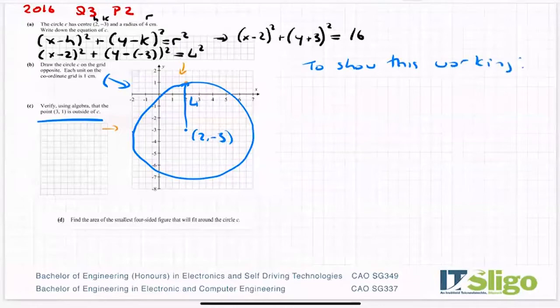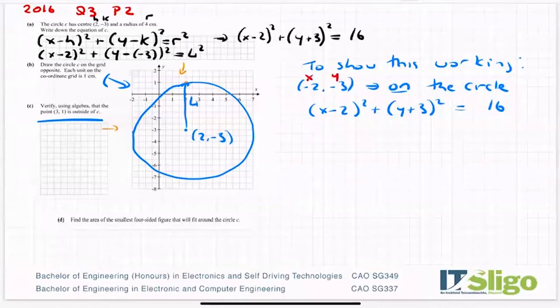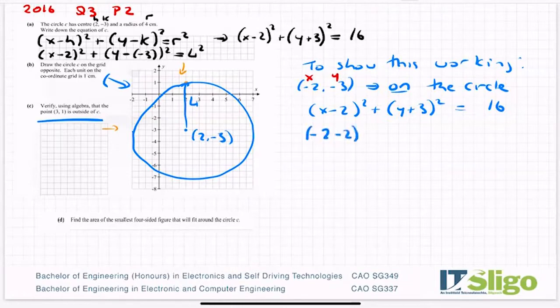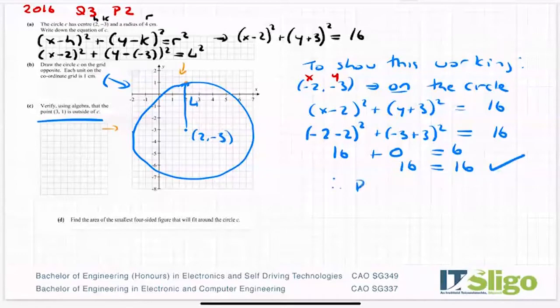Remember, we said that another point on the outside of that circle would have been over here, which would have been (-2, -3). We think that's on the circle. So let's sub it into the equation of that circle. So that's my x, that's my y. (-2 - 2)² plus (-3 + 3)² = 16. -2 - 2 is -4 squared is 16. -3 + 3 is 0 squared is 0. And I am getting 16 = 16. So therefore, that point is on the circle.